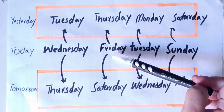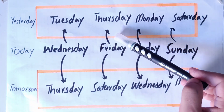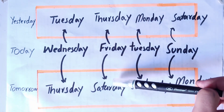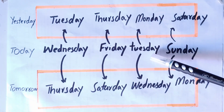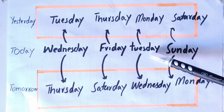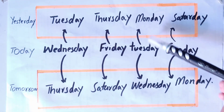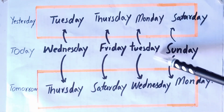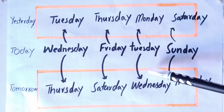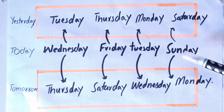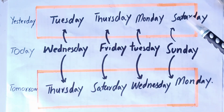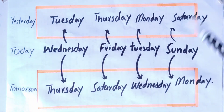If today is Friday, yesterday was Thursday and tomorrow will be Saturday. If today is Tuesday, yesterday was Monday and tomorrow will be Wednesday. And if today is Sunday, yesterday was Saturday and tomorrow will be Monday.